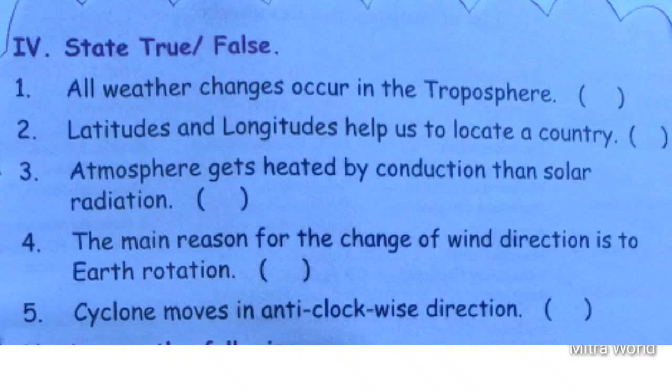Fourth one — the main reason for the change of wind direction is the earth's rotation. Wind direction changes because of earth's rotation. So the statement is true. Fourth statement is also true.